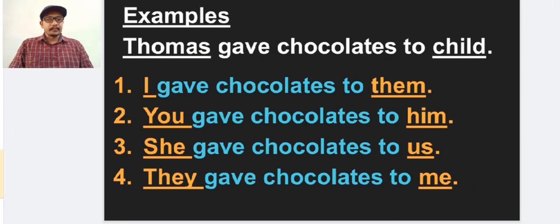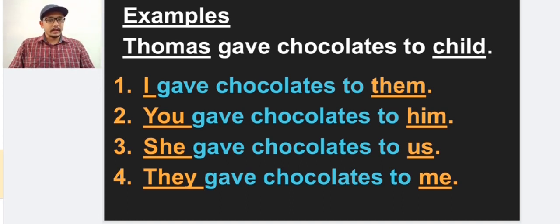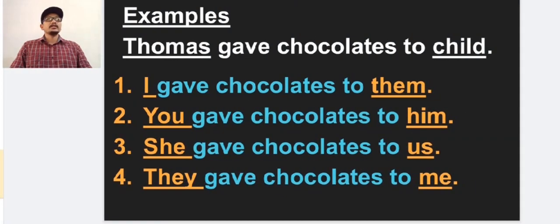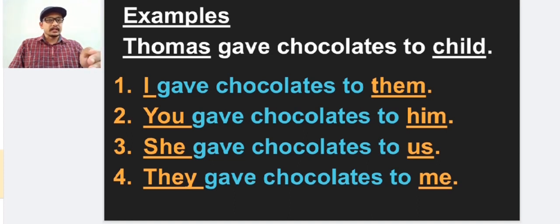Let us check another example: 'You gave chocolates to him' — you is the subject, him is the object. 'She gave chocolates to us' — she is the subject, us is the object. 'They gave chocolates to me' — they is the subject, me is the object. So here we have used different persons — first, second, third — as well as subject and object. In personal pronouns we have to take care of the subject pronoun and the object pronoun and use them in the proper place.